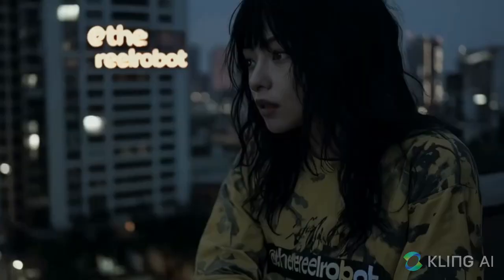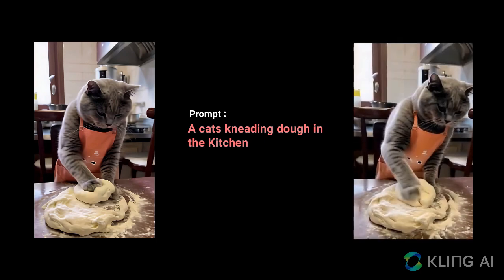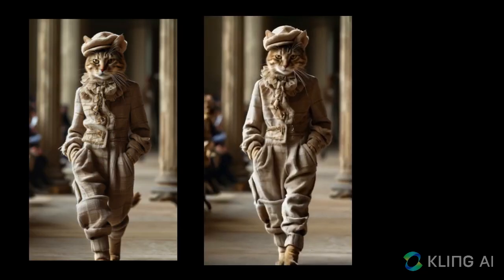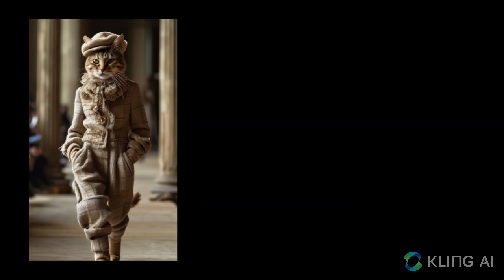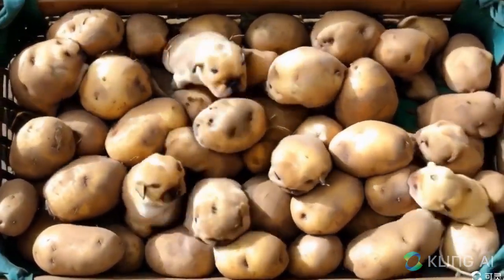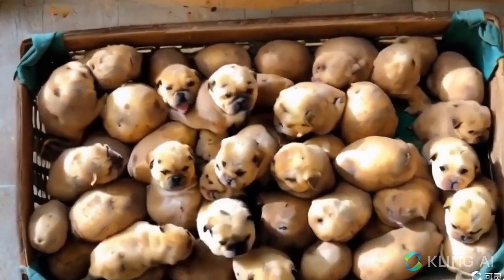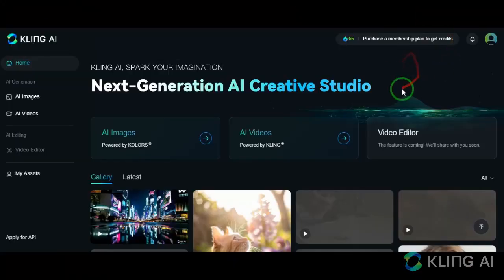Kling AI generates much better results. I can give the AI a picture and say there's a cat in the kitchen kneading dough. I can also give it a picture and write no instructions at all — no prompts. It realizes that a cat walks on all fours, so it makes it take steps and walk. I can give it a box of potatoes and tell it to turn them into a bunch of dogs. This is where a little creativity allows you to make viral videos.